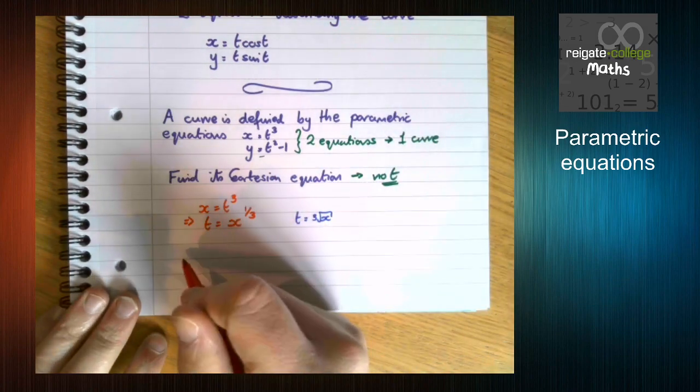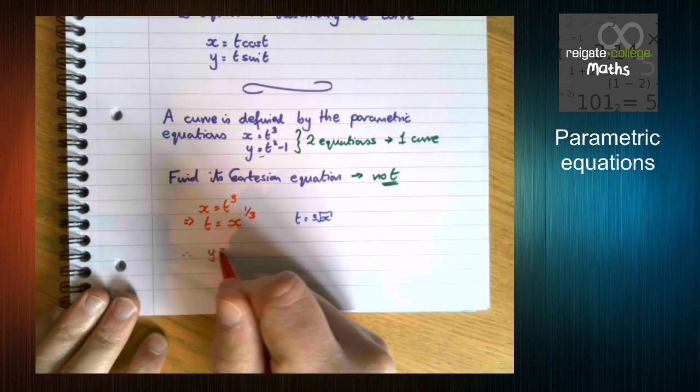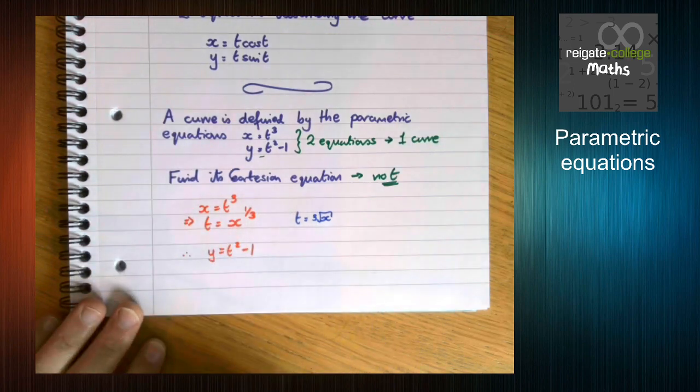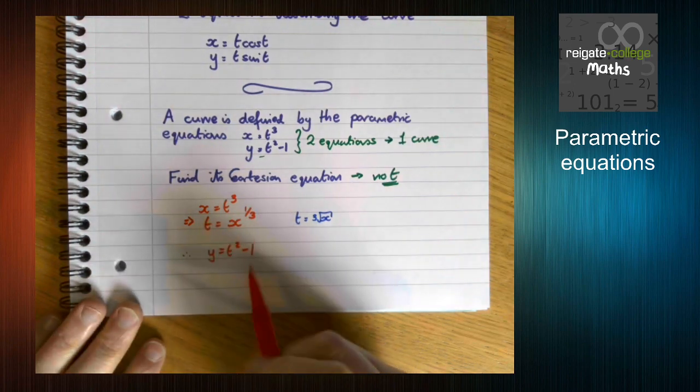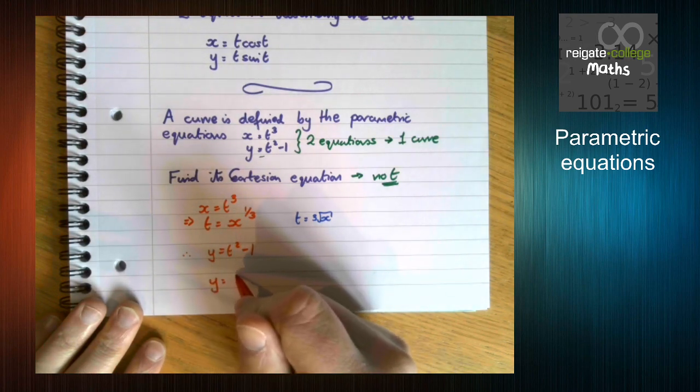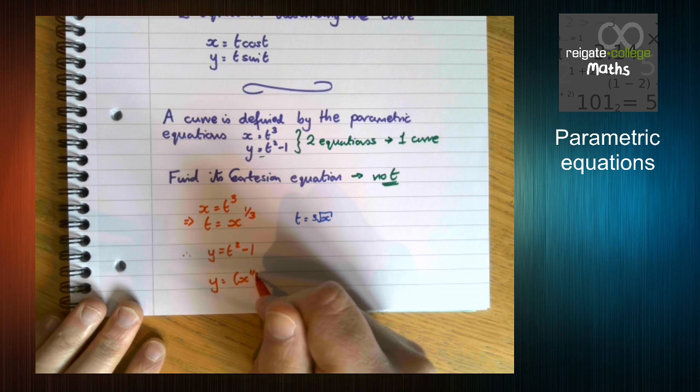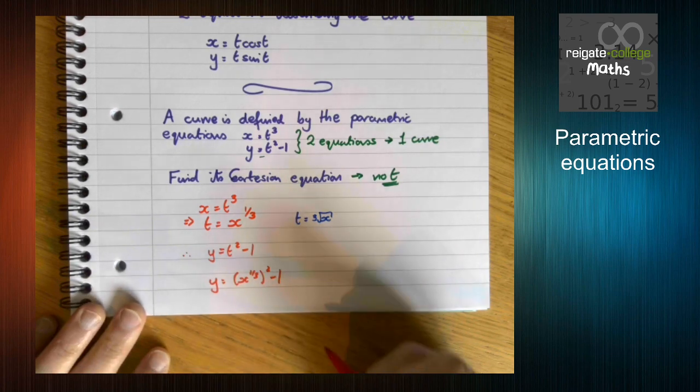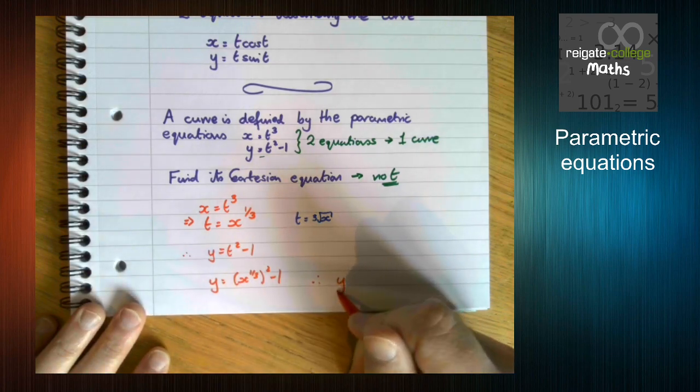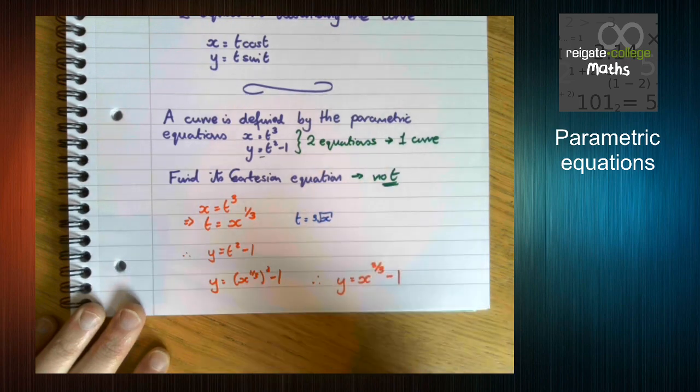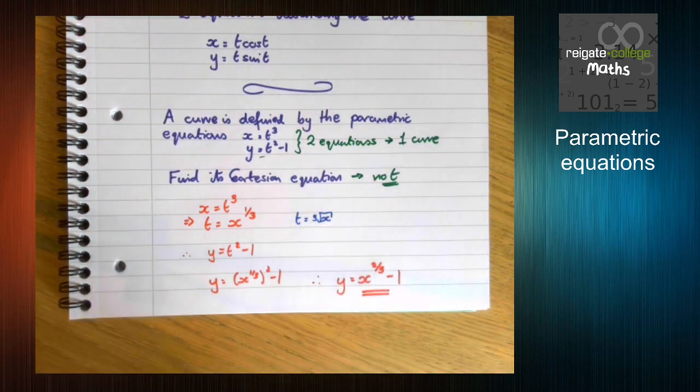So now what we want to do is substitute t equals x to the third into here. So we get y equals x to the third squared minus 1, which tells me that y equals x to the 2 over 3 minus 1. And that's my Cartesian equation.